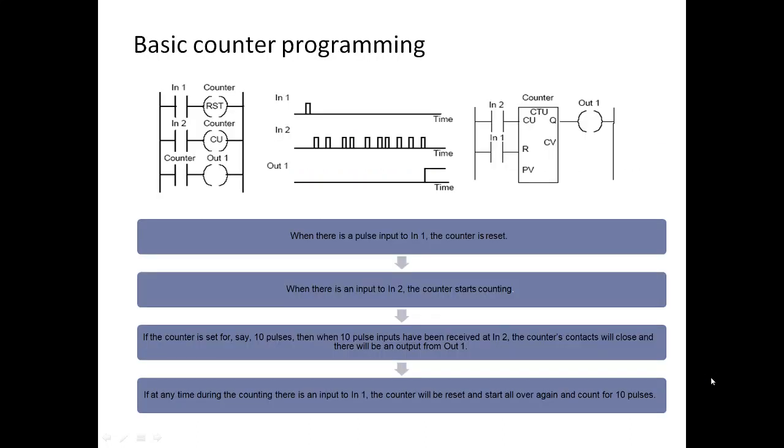Basic counter. When there is a pulse input in 1, the counter is reset. When the input is 2, the counter starts counting and the counter is set to say 10 pulses. When 10 pulse inputs have been received, there is an output taken when the contacts is closed.